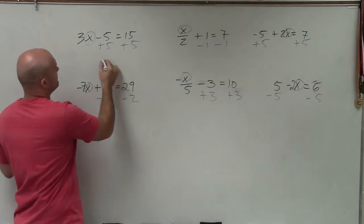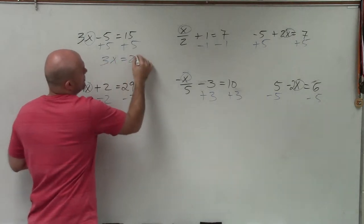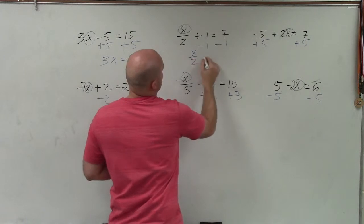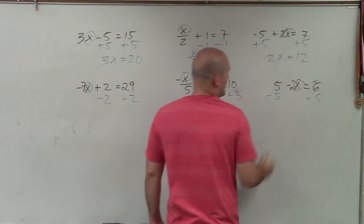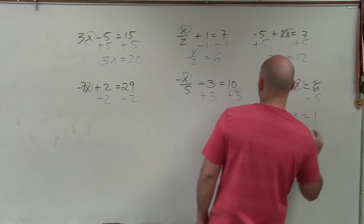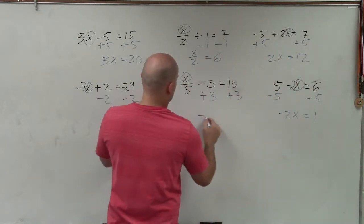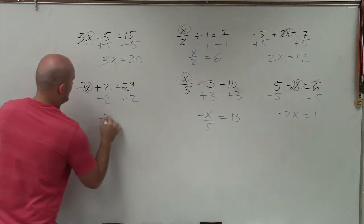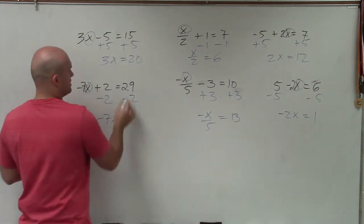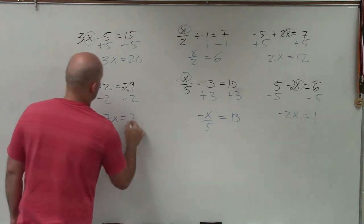Then we go ahead and simplify, and we have 3x equals 20, x over 2 equals 6, 2x equals 12, negative 2x equals 1, negative x over 5 equals 13, and negative 7x equals 27.